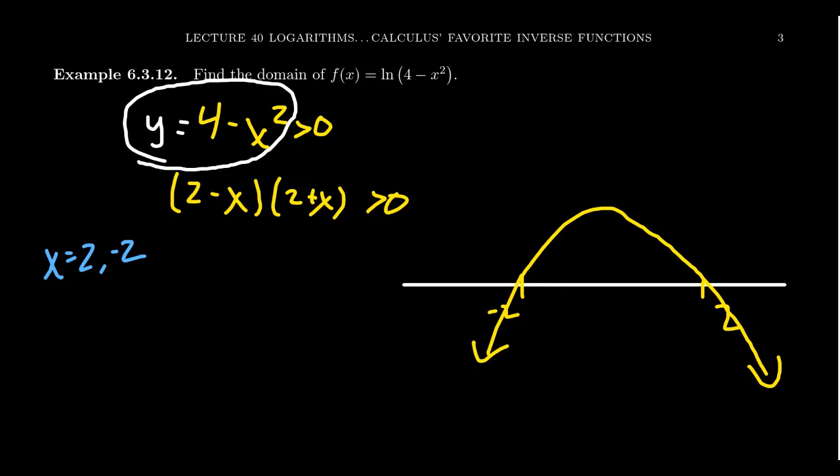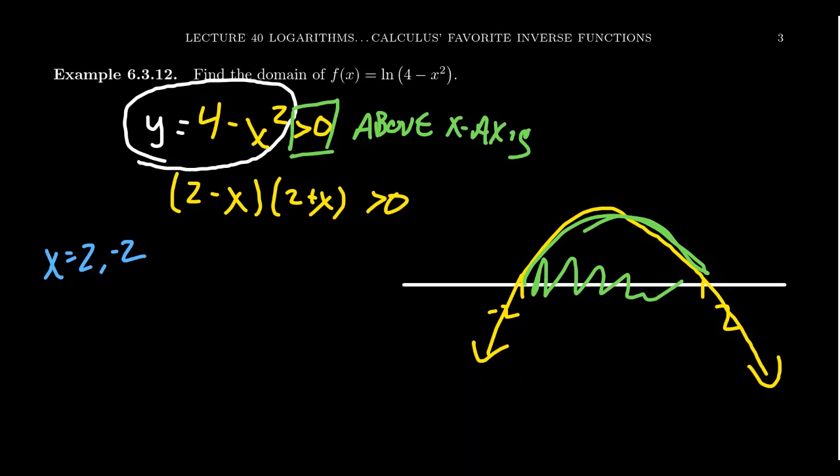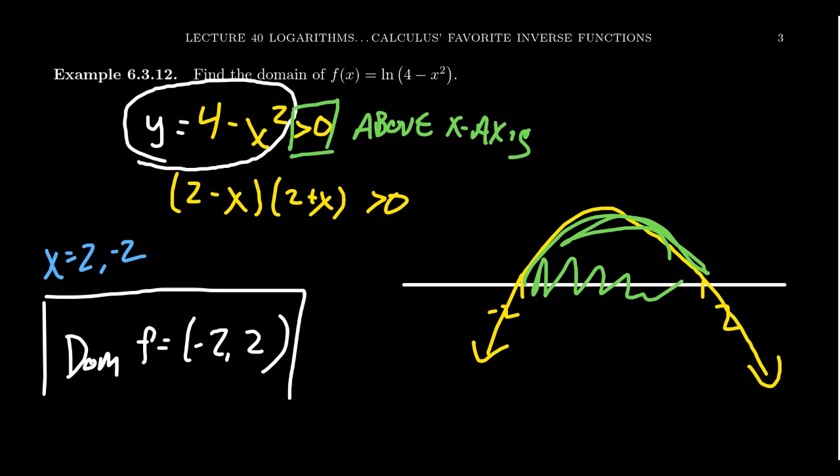But we want things that are greater than 0. So greater than 0 here means we're looking for on the picture those things which are above the x-axis. And so we're going to see that's going to happen in this sector right here because our function here is above the x-axis. So what that means for us is that the domain of our function f in this situation is going to be negative 2 to 2. So we get all numbers between negative 2 and 2, but the x-intercepts of that parabola are not included because that would be the natural log of 0, which is undefined.